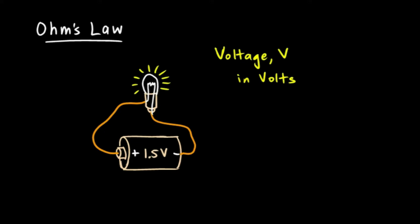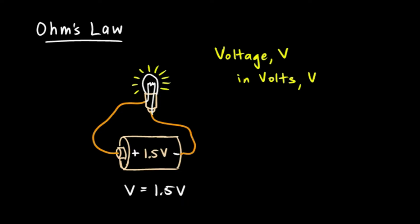The symbol for volts is also V, so you end up writing things like V equals 1.5 V, which looks like strange algebra — how can V equal 1.5 times V? But that's not what this says; this is not an algebraic error. It says the voltage, the quantity, is 1.5 volts. The second V is the unit. They just happen to have the same letter, but it's easy to tell by context which is which.